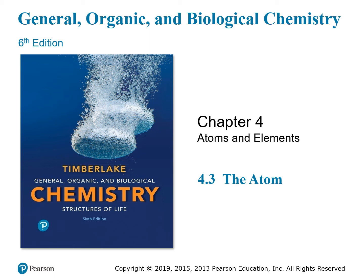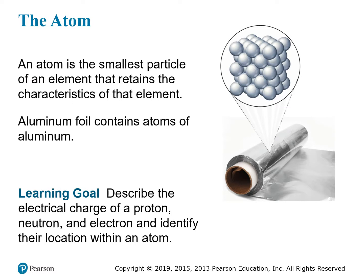This is chapter 4, Atoms and Elements, and we're continuing here with section 3, where we're going to learn about the atom and the structure of the atom. An atom is the smallest particle of an element that retains some of the characteristics of the element. The goals of this presentation are to describe some of the properties of the subatomic particles — the particles that make up the atom — and how they are structured within an atom.